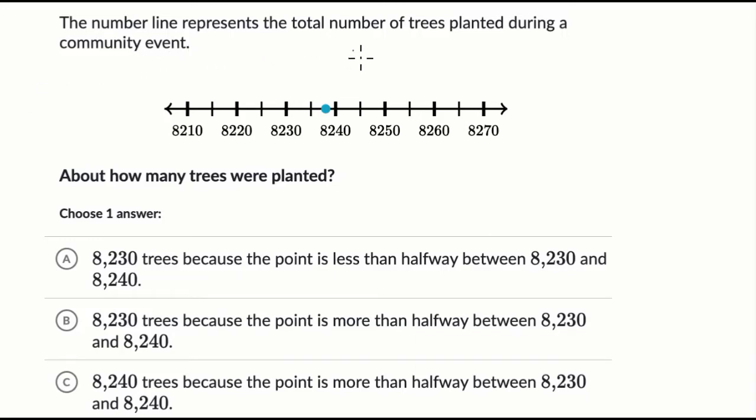We're told the number line represents the total number of trees planted during a community event. All right, so they put the dot there and it looks like they're counting by tens.